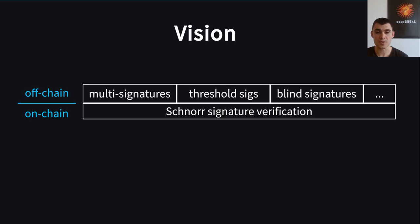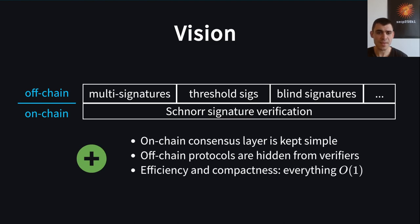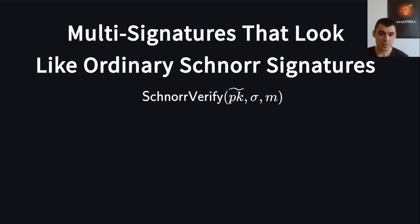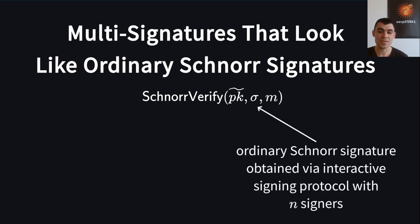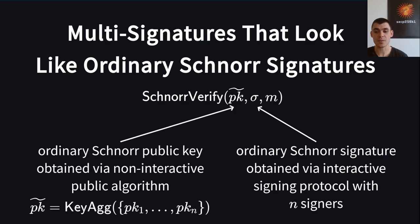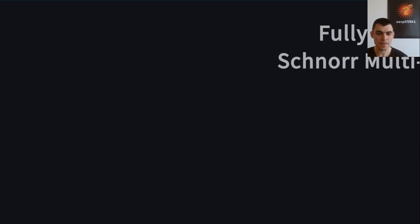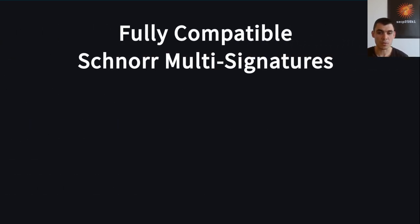This design has multiple advantages. First, the on-chain consensus layer is kept simple and the complexity is moved to off-chain protocols. What ends up on-chain is just an ordinary Schnorr public key and signature. This is great for privacy because by looking at the chain an observer cannot tell that a complex protocol is going on in the background. Moreover, this approach is efficient and the on-chain data is very compact. To make this vision reality we need a multi-signature scheme compatible with ordinary Schnorr signature verification. The first challenge is an interactive signing protocol enabling N signers to produce an ordinary Schnorr signature. The second challenge is a non-interactive key aggregation algorithm, so everyone can combine a multi-set of public keys into a single aggregate key. We call a scheme with these two properties a fully compatible Schnorr multi-signature scheme.